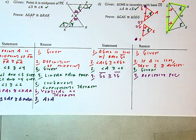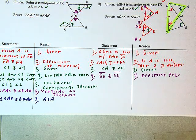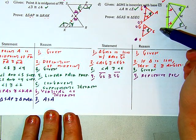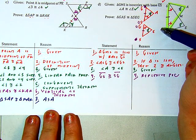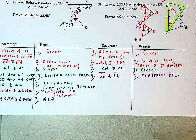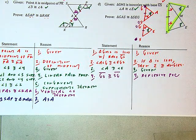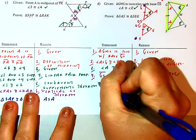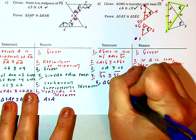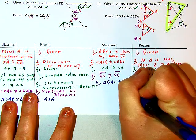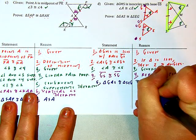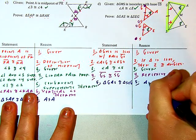I'm ready to reach my conclusion. I've shown two pairs of corresponding angles that are congruent and one pair of corresponding sides — not included, but congruent. So triangle GAS is congruent to triangle SEG — angle-angle-side.